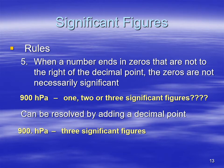Rule number five: when a number ends in zeros that are not to the right of the decimal point, the zeros are not necessarily significant. For example, 900 hectopascals — is that one significant figure? Maybe they measured it to the nearest 10 hectopascals or the nearest one hectopascal. You don't know. You can figure that out by putting a decimal point in: 900. with a decimal point indicates there are three significant figures, and that last digit right before the decimal point is our uncertain value.